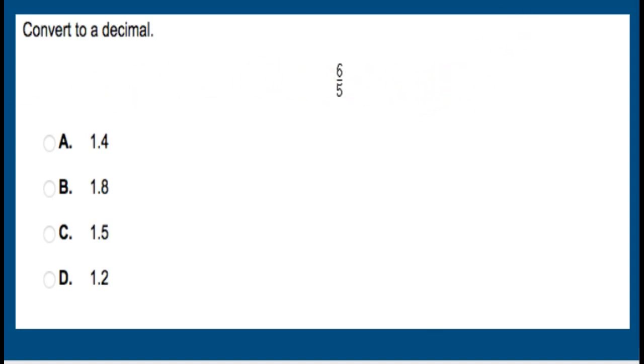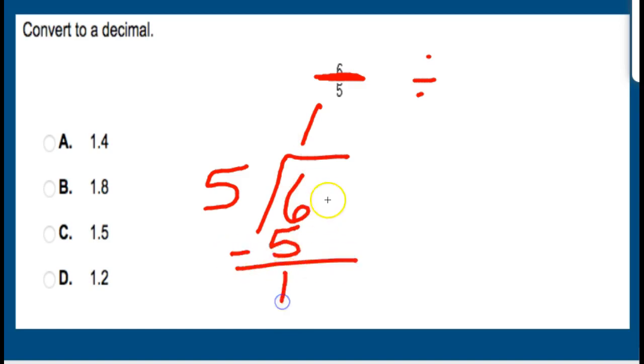Convert to a decimal. 6/5. Now, hopefully, you are fairly comfortable with the idea that this fraction bar here is the same as a division symbol. So basically what you're saying is 6 divided by 5. We're going to figure out what the decimal is here. 5 goes into 6 one time. Well, I'm going to have to place my decimals. Bring down my decimals. Bring down the 0 here. How many times 5 going to 10? 2 times. 2 times 5 is 10. So I end up with a 0 remainder. My equivalency is 1.2.